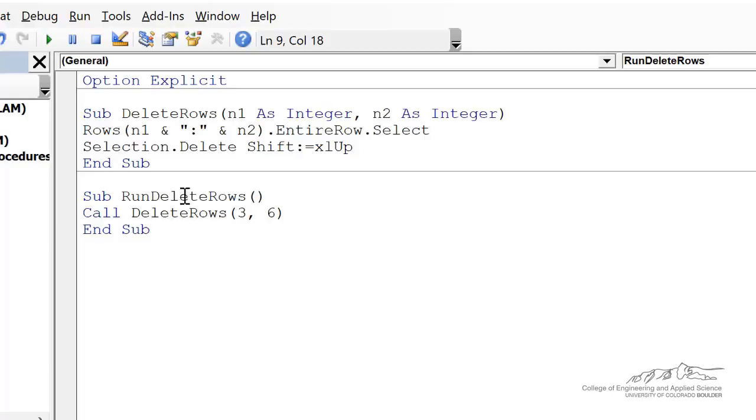We have a sub here, run delete rows, that's going to call the delete rows sub up here, starting with row 3 and let's go through 7.